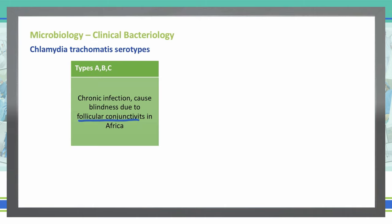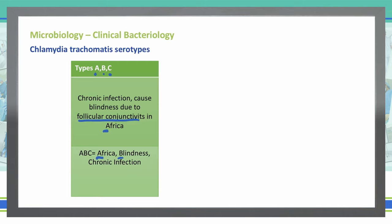A way to remember types A, B, and C is: A, B, C stands for Africa — where it's located — Blindness, due to follicular conjunctivitis, and Chronic infection. So the mnemonic is: A, B, C — Africa, Blindness, Chronic infection.